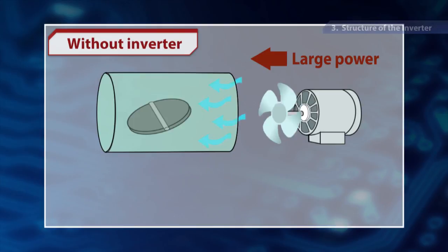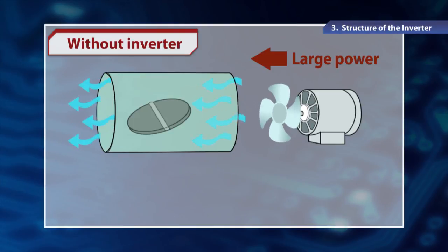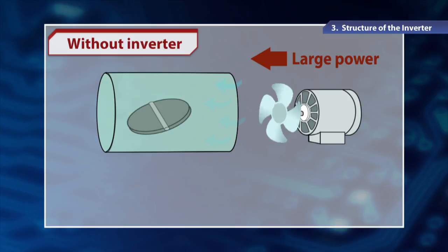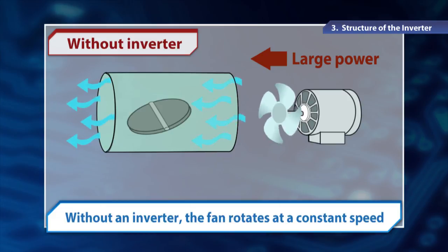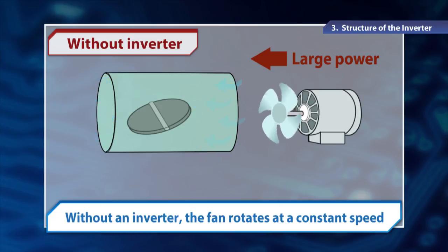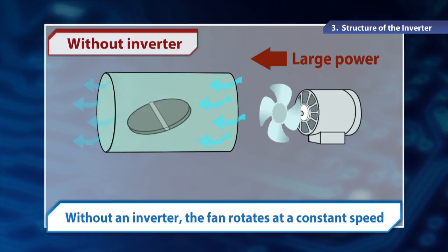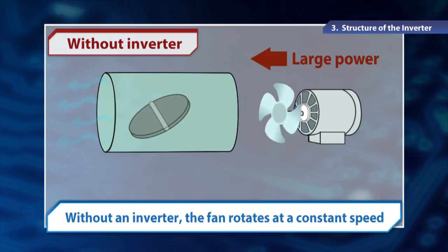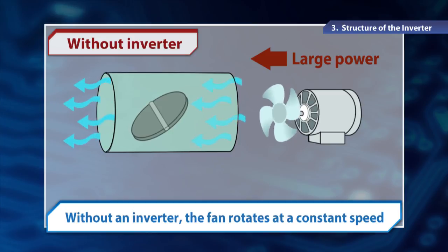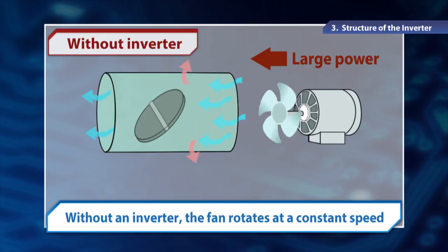When a fan runs without an inverter, but by a commercial power supply at a constant voltage and frequency, the fan rotates at a constant speed. To reduce the airflow, dampers are used, but since the motor continues to use power, it is wasted.